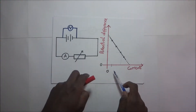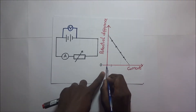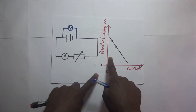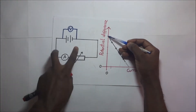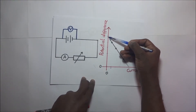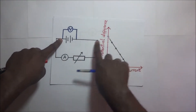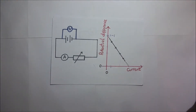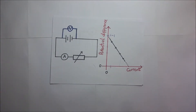Looking at this graph, there is a certain amount of potential difference when the current is zero. When no current is being drawn out, the potential difference across the terminals is actually maximum — it is highest at that point. This maximum potential difference across the terminals when no current is being drawn out is what we call the EMF of the cell, or electromotive force.